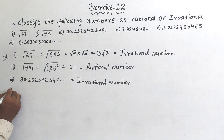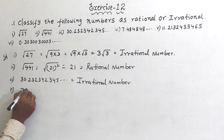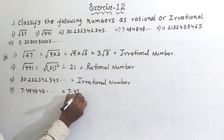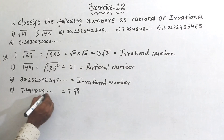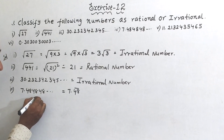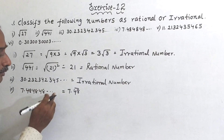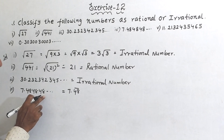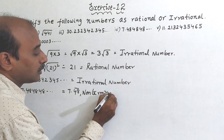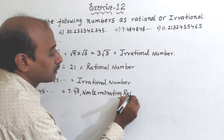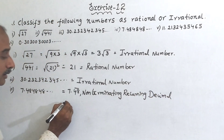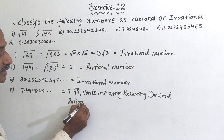Roman (iv): 7.48484848... and so on. You can write this as 7.48̄ because 48 is repeating. Here there is no end, but 48 is recurring. Therefore this is a non-terminating recurring decimal — non-terminating means no end, recurring means 48 is repeating — therefore this is a rational number.